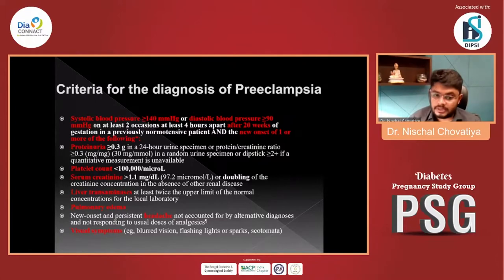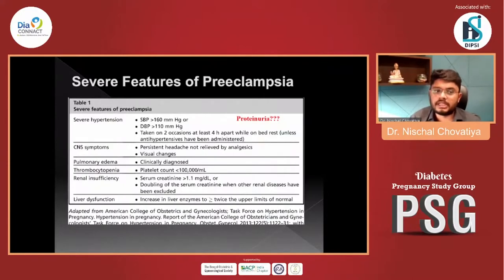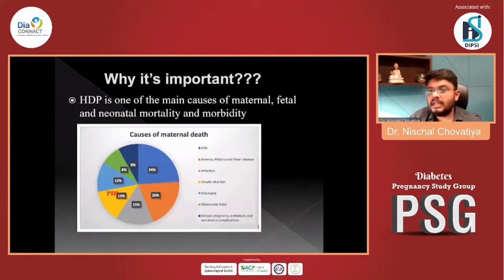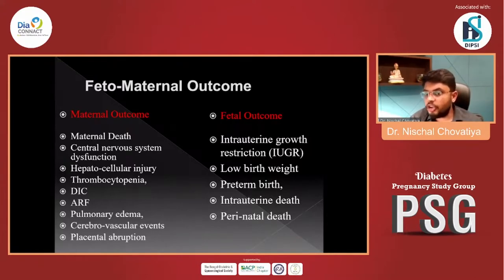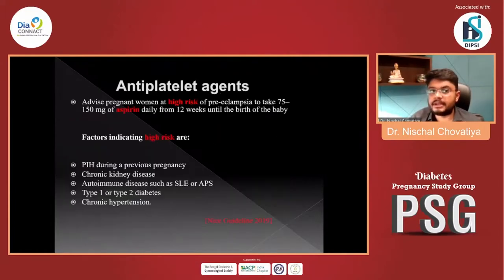Additional features include thrombocytopenia, renal dysfunction, liver dysfunction, pulmonary edema, new onset of persistent headache, visual disturbances, or CNS disturbances. Severe features of preeclampsia include severe headache, visual changes, thrombocytopenia, and elevated liver enzymes. Preeclampsia is one of the main causes of maternal, fetal, and neonatal mortality and morbidity. Maternal outcomes include maternal death, CNS dysfunction, hepatocellular injury, thrombocytopenia, DIC, ARF, and pulmonary edema. Fetal outcomes include IUGR, low birth weight, and preterm delivery.